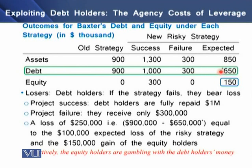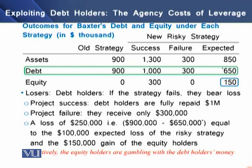The expected payoff for the debt holder is only $650,000, so debt holders are basically the losers. If the strategy fails, they bear the loss. In case of a successful project, the debt holder receives their full $1,000,000. If the project fails, they receive only $300,000. There is a net loss of $250,000 — the difference between the firm's assets of $900,000 and the net payoff to debt holders of $650,000. That loss of $250,000 corresponds to the $100,000 expected loss of the riskier strategy plus the $150,000 gain going to equity holders.